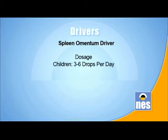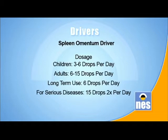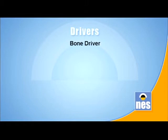Regarding dosage: in children who are sensitive, you may only use three to six drops per day. In adults, you may use six to fifteen drops. For longer-term use, we suggest six drops a day, but in more serious diseases you might have to use a stronger dosage of fifteen drops twice a day. The period of use for spleen omentum driver is between three to six weeks.